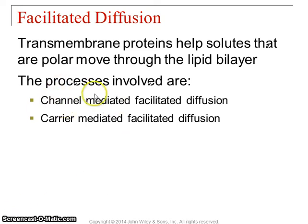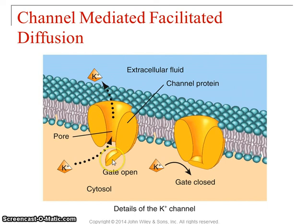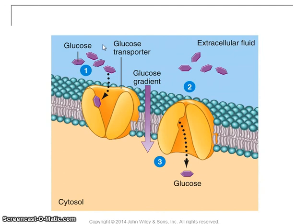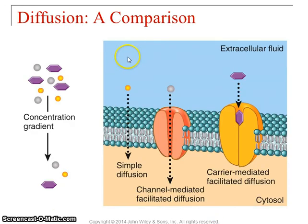Here's an example of channel-mediated facilitated diffusion: a potassium channel letting potassium move down its concentration gradient from high to low. And here's carrier-mediated facilitated diffusion, letting glucose go down its concentration gradient — the carrier protein changes shape to allow it to do so. So simple diffusion moves right through, channel-mediated uses a channel, and carrier-mediated uses a carrier. All of these molecules are moving from high to low — the way they want to move — which is why they don't need any ATP.